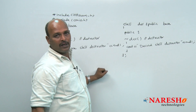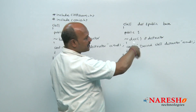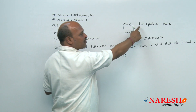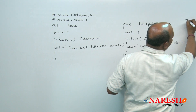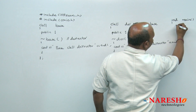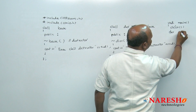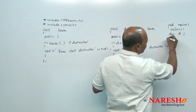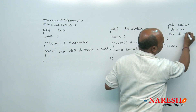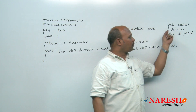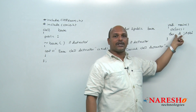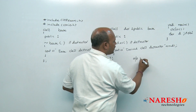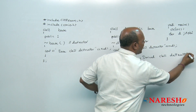Now in the main function, I write clrscr(), then create an object: derived D. When the block closes, the destructor of the derived class executes. The first output is "derived class destructor" because the derived class destructor runs first when the object goes out of scope.